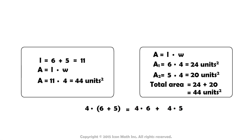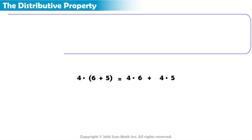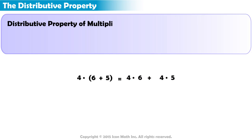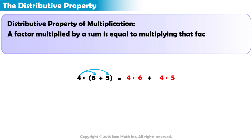The property represented here is the distributive property. The distributive property states that a factor multiplied by a sum is equal to multiplying that factor by each addend and then adding the products. Now we can replace the values in our example with variables to show the distributive property algebraically.